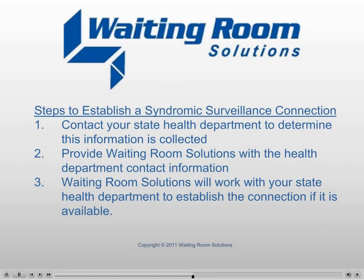Steps to Establish a Syndromic Surveillance Connection: Contact your state health department to determine if this information is collected. Provide Waiting Room Solutions with the health department contact information. Waiting Room Solutions will work with your state health department to establish the connection if it is available.